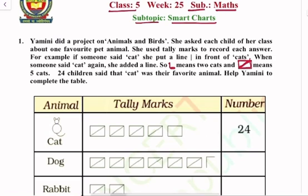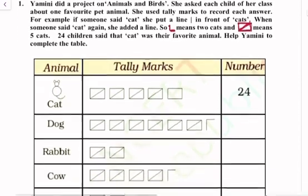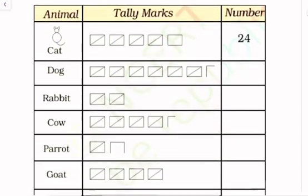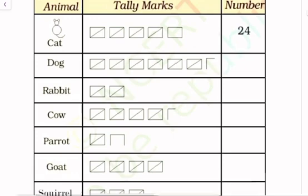Help Yamini to complete the table. So let's start. In the first box, tally marks are 5, 10, 15, 20, and 4 - total 24. In the dog box, tally marks we will count: 5, 10, 15, 20, 25, 30, and 2. The number is 32.